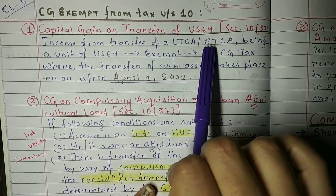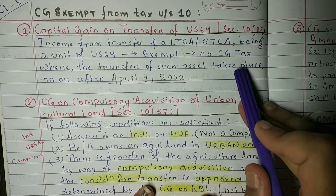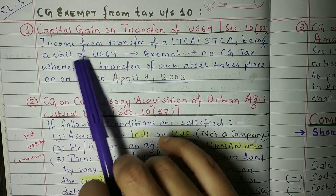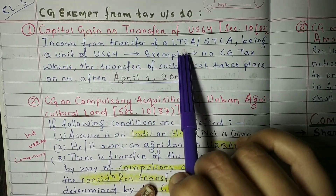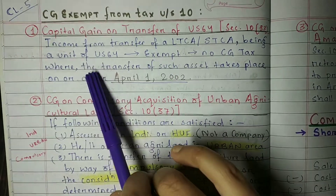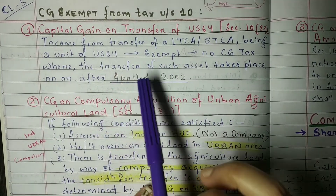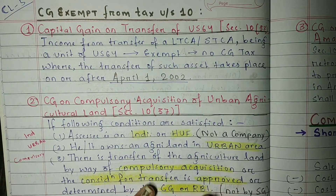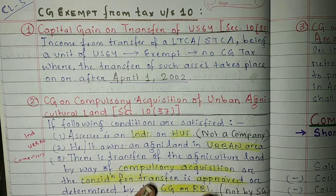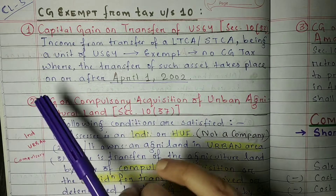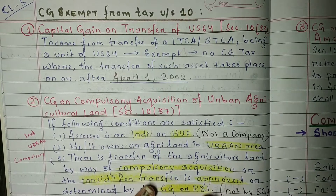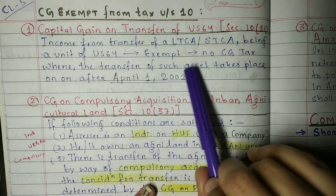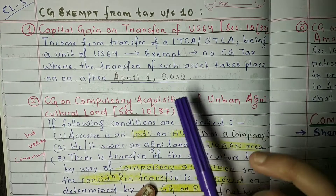First point: capital gain on transfer of US 64 under Section 10 clause 33. Whatever income we are earning by transferring a long-term capital asset or a short-term capital asset being a unit of US 64 is exempted — we don't need to pay capital gain tax. The condition is that this transfer of asset should take place on or after 1st April 2002. If it is before 1st April 2002, we will not get exemption and will have to pay capital gains tax.